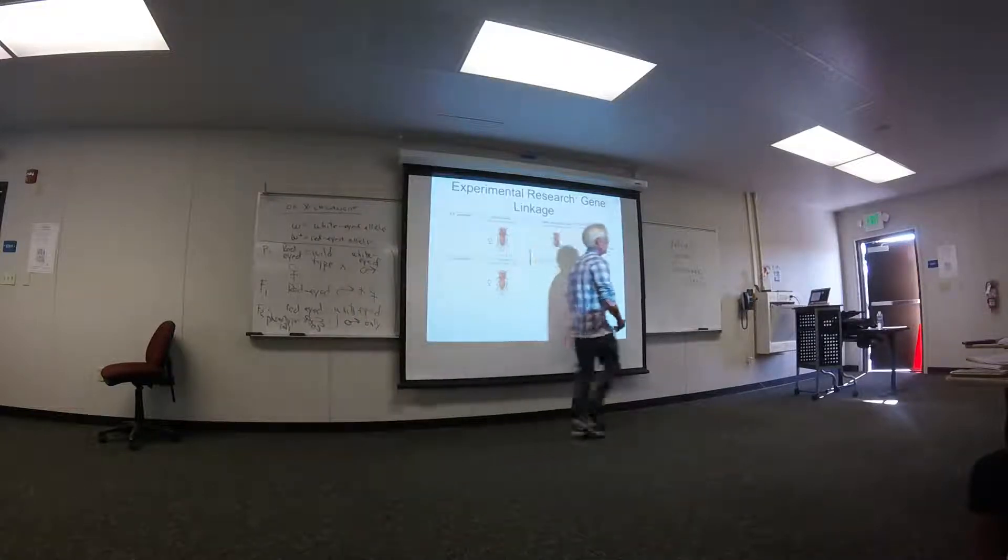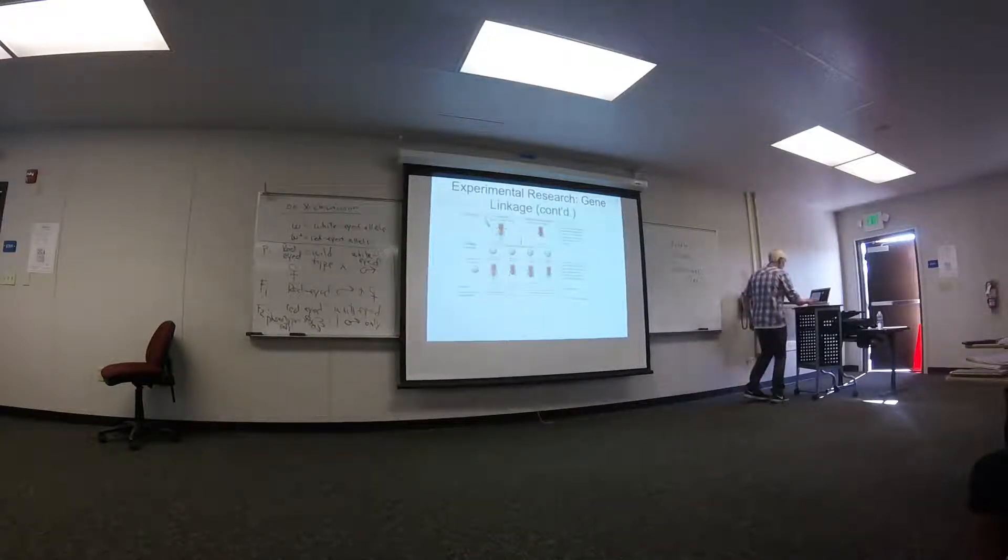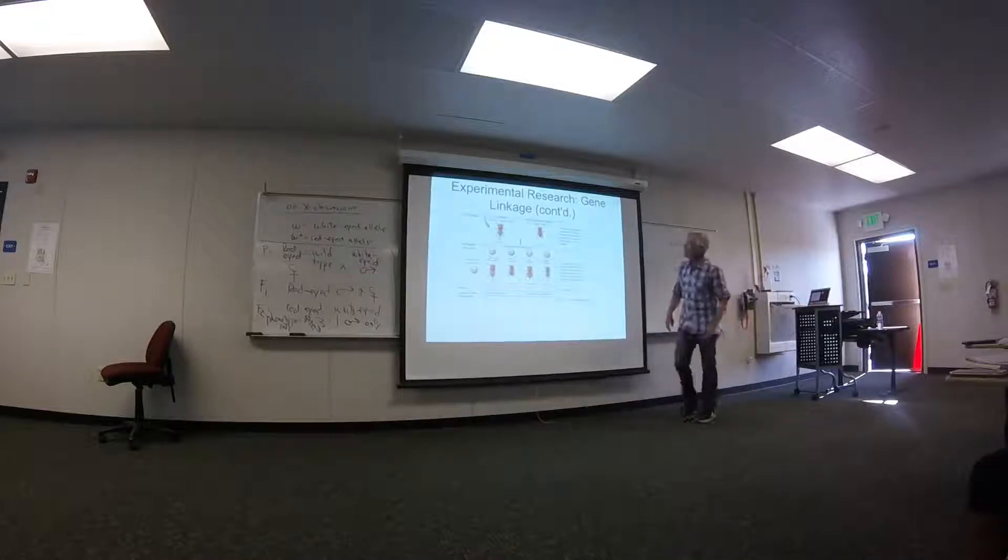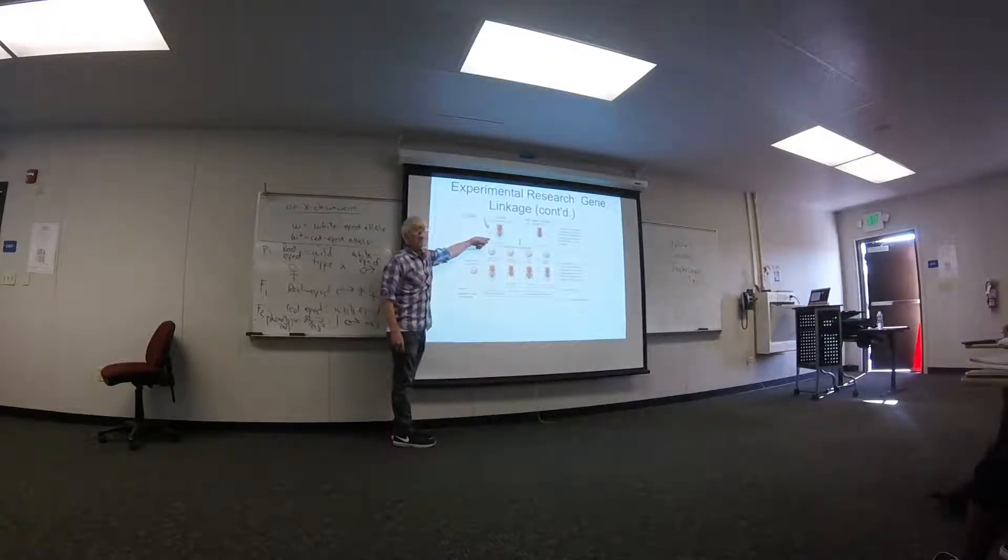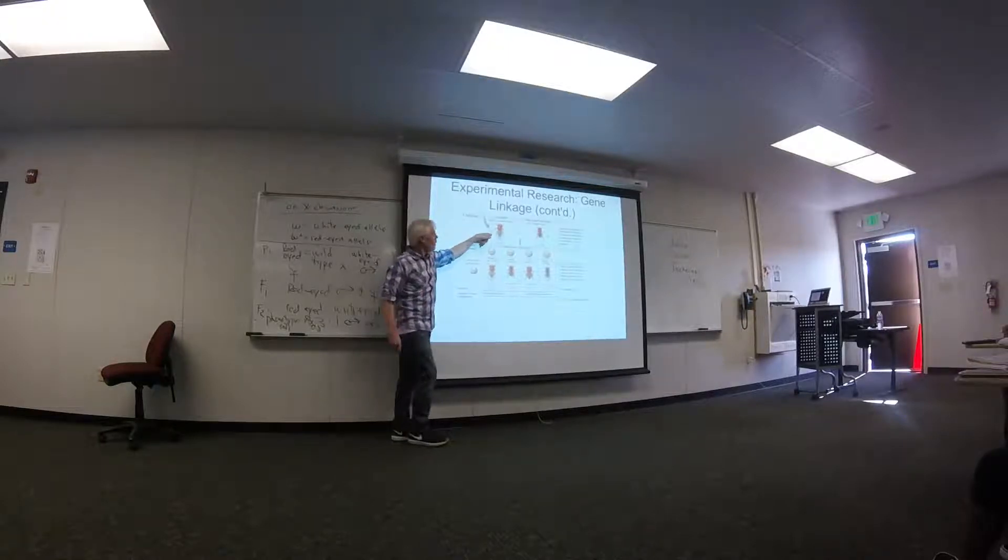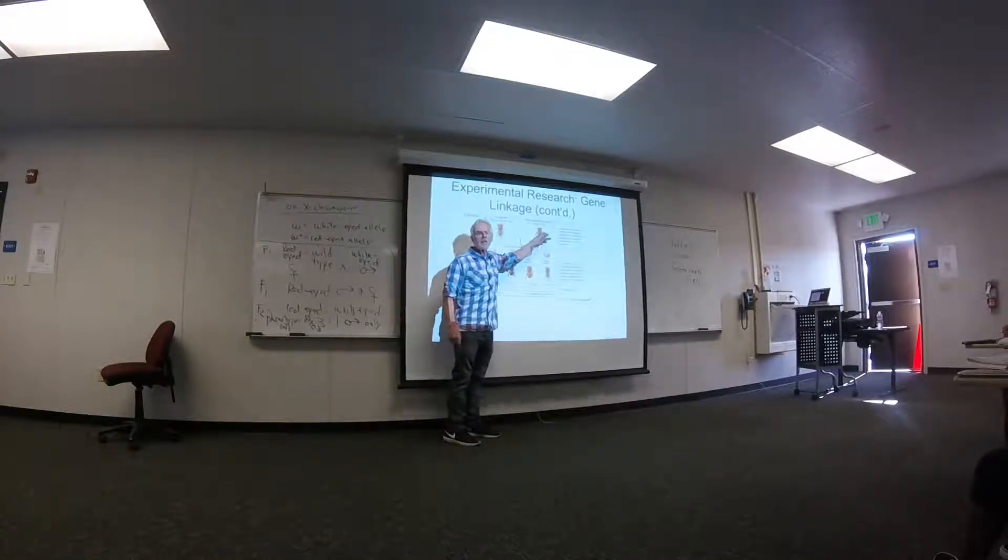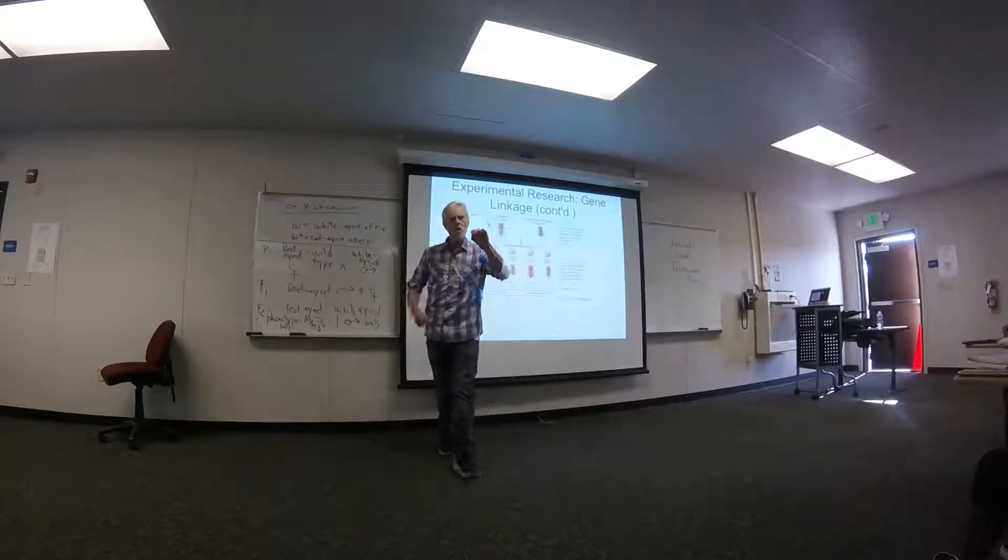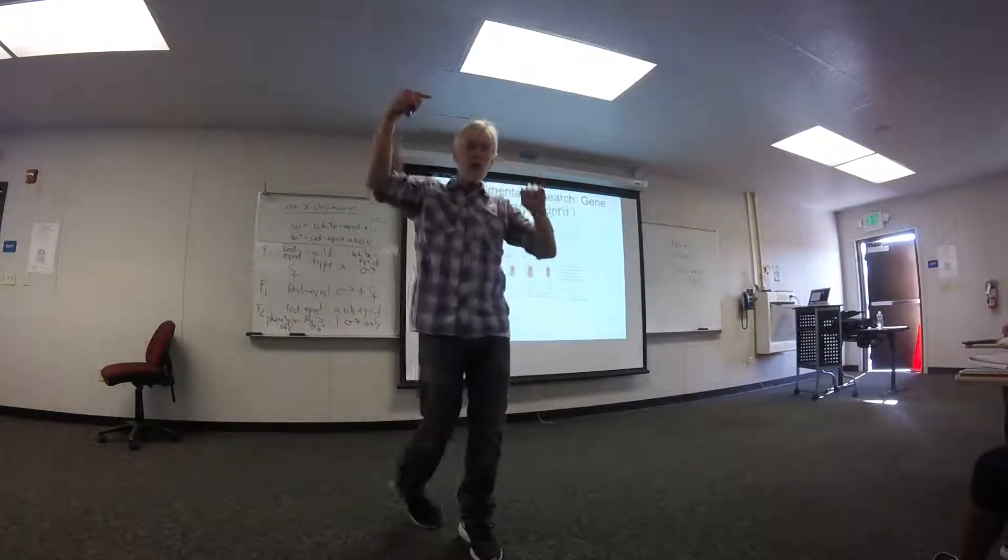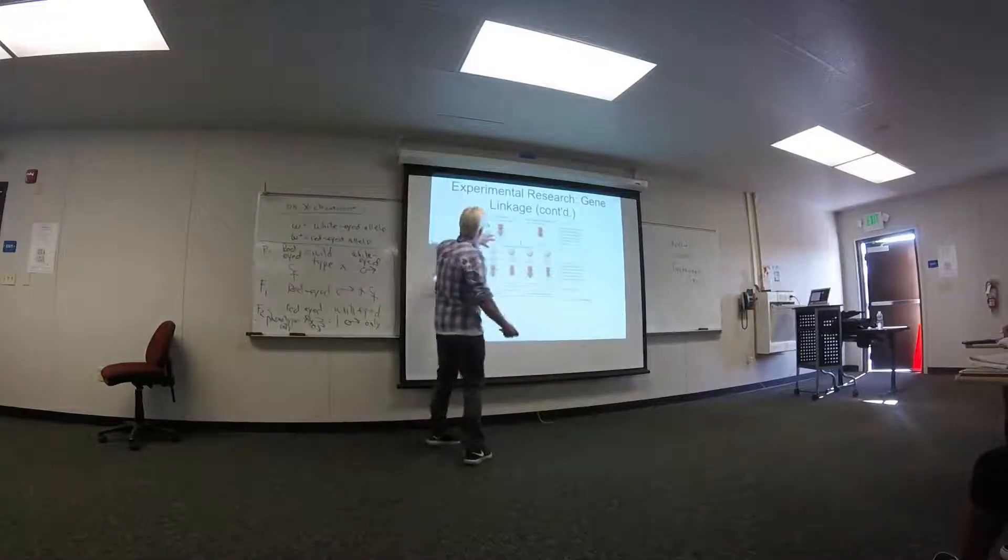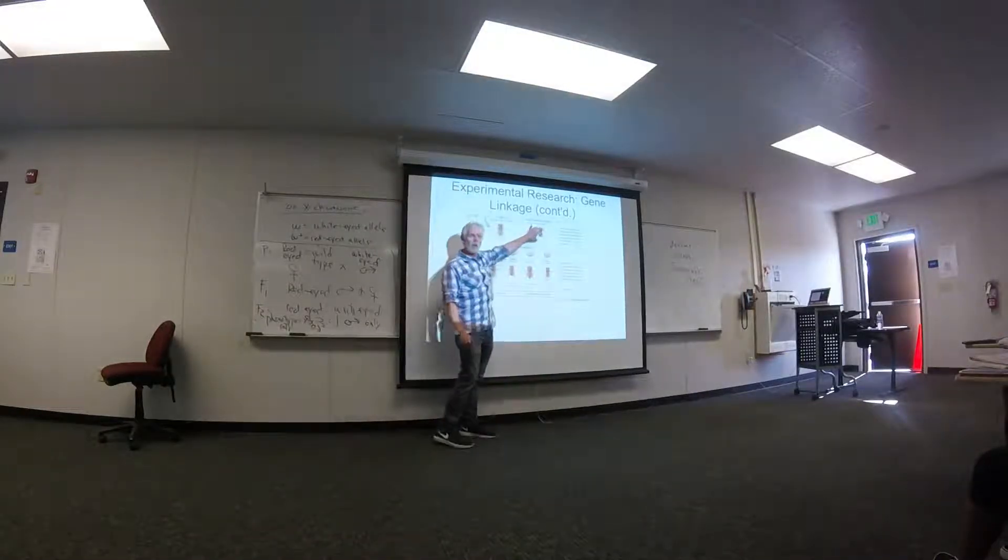It's going to backcross the heterozygous female back with the recessive male. This is just like Mendel's test cross. You took the F1 heterozygous individuals and backcross the recessive individuals to reveal the genotype. It's a test cross. So you're backcrossing the daughter with her father.